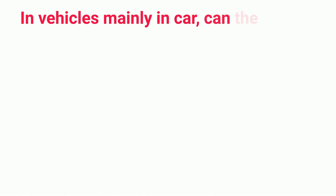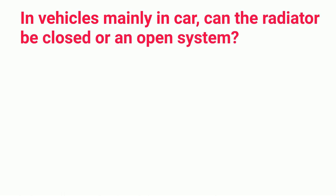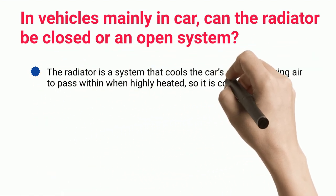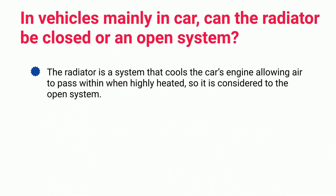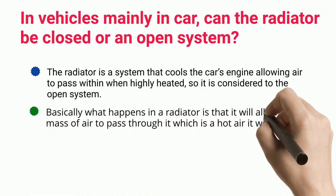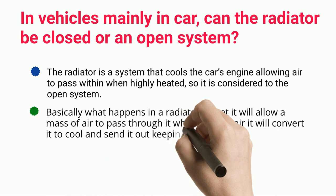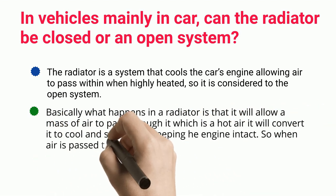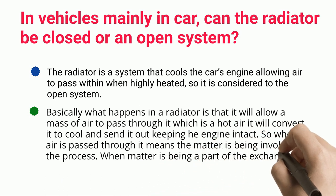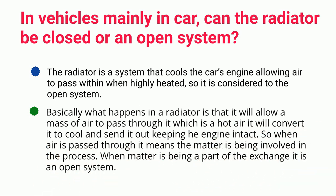In vehicles, mainly in cars, can the radiator be a closed or open system? The radiator is a system that cools the car's engine by allowing air to pass within when highly heated, so it is considered an open system. Basically, the radiator allows a mass of hot air to pass through it, converts it to cool air, and sends it out keeping the engine intact. Since air — meaning matter — is being passed through it and involved in the exchange, it is an open system.